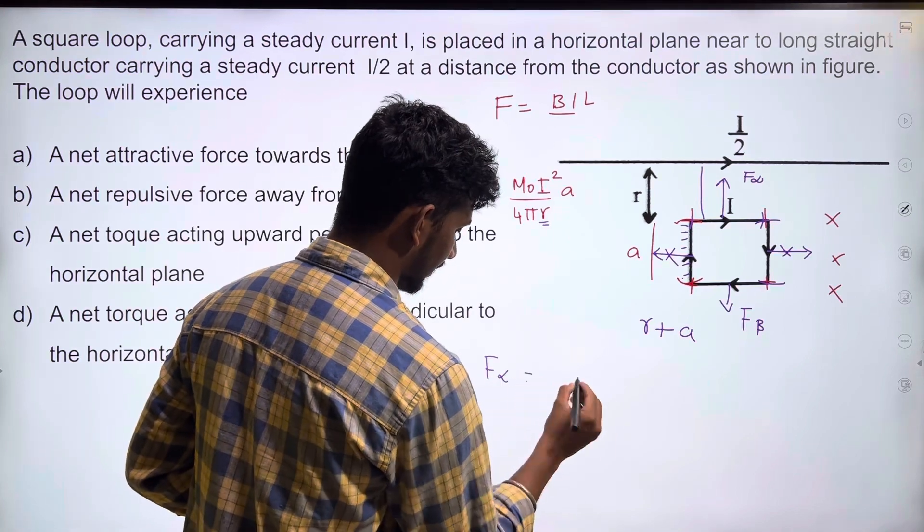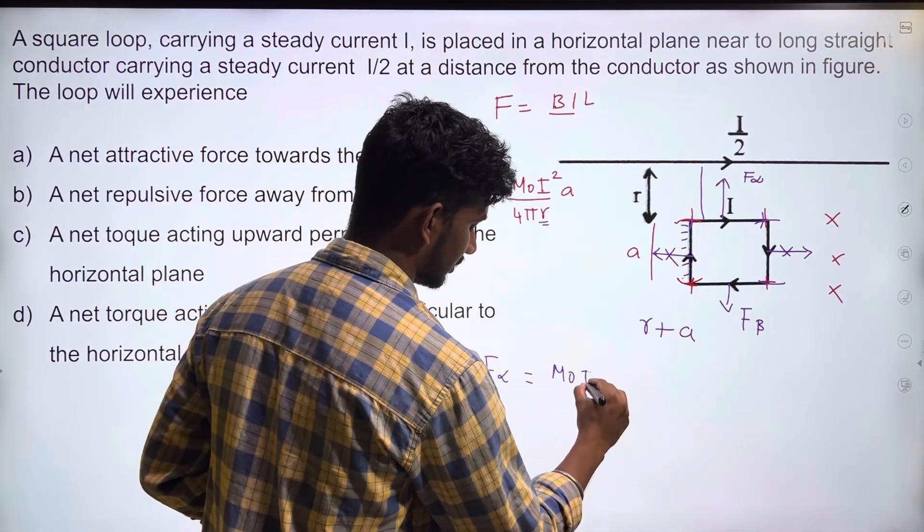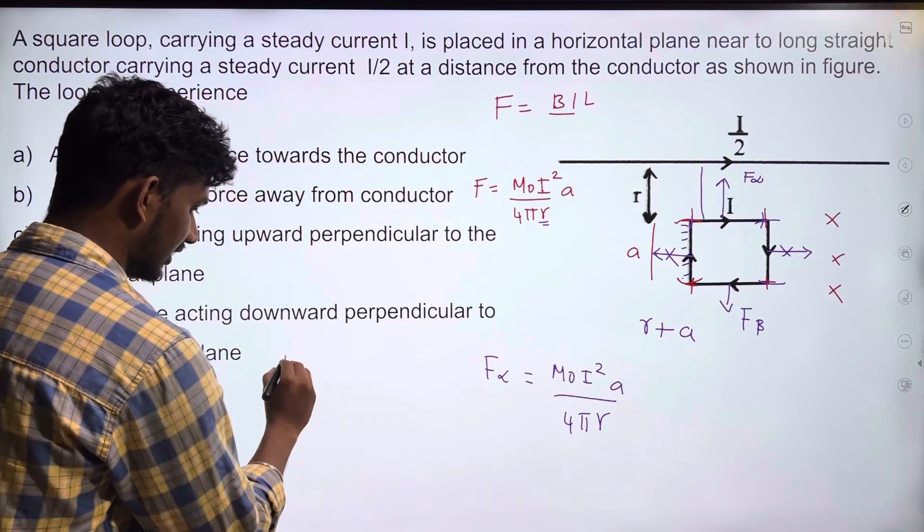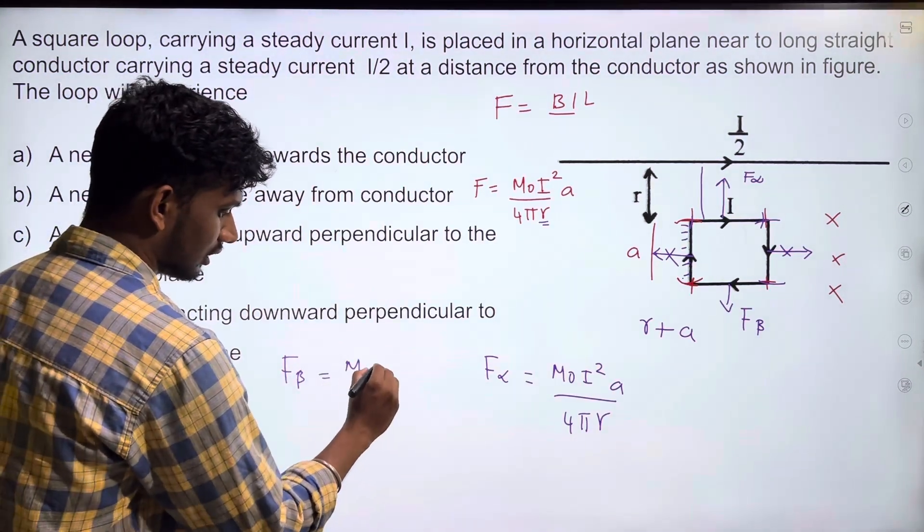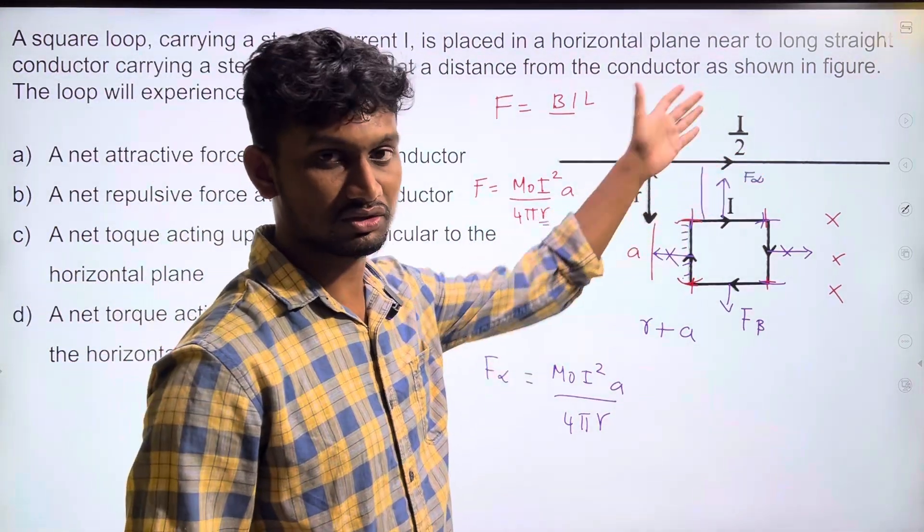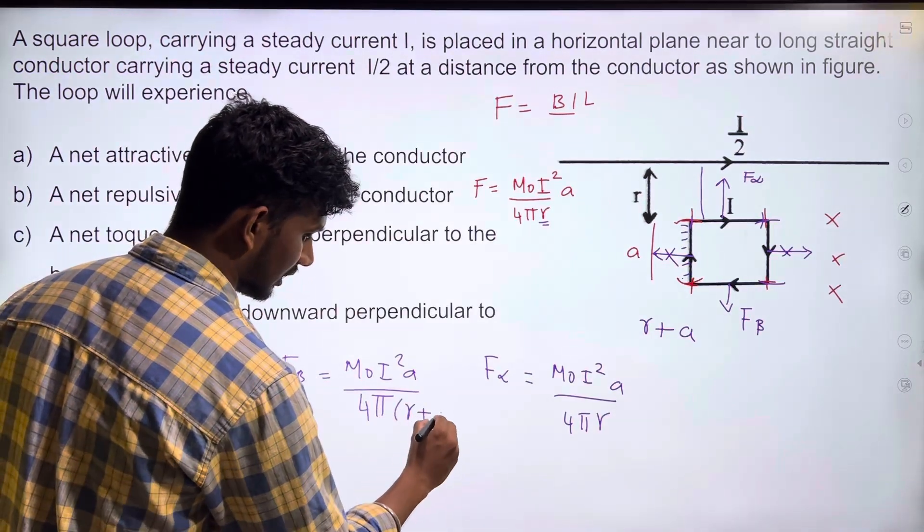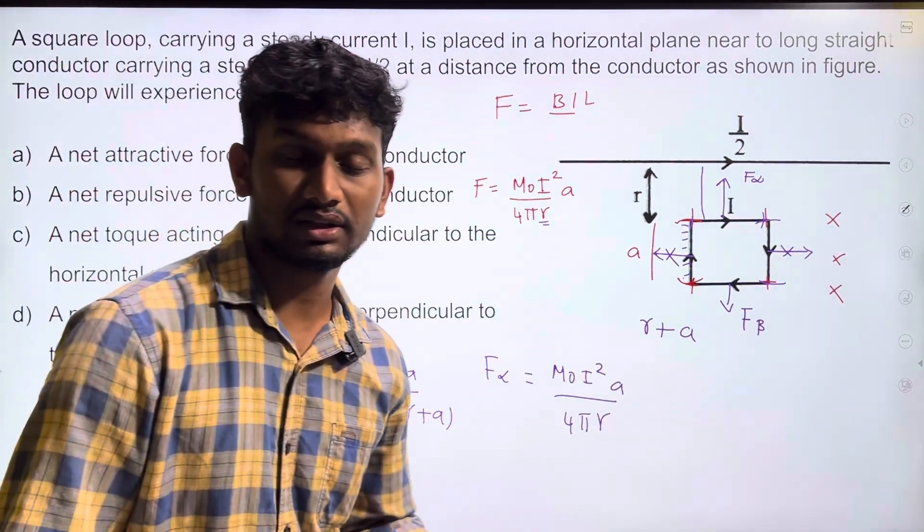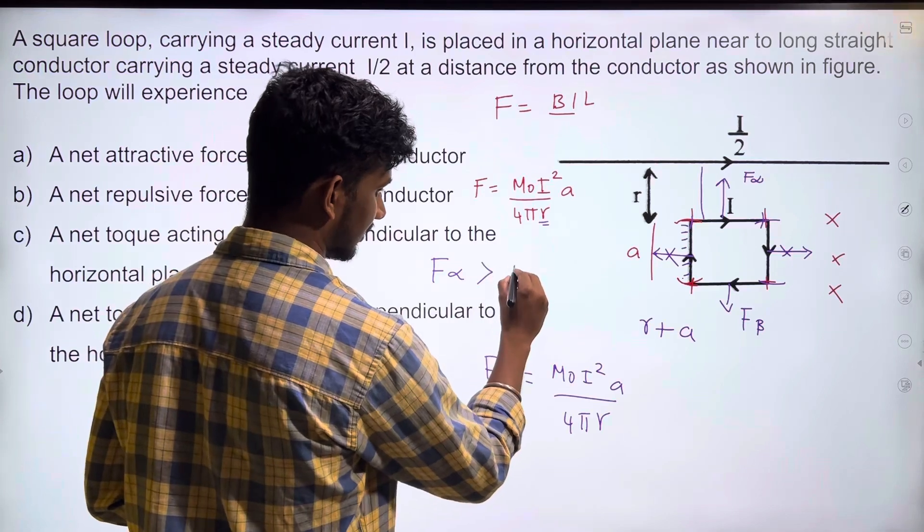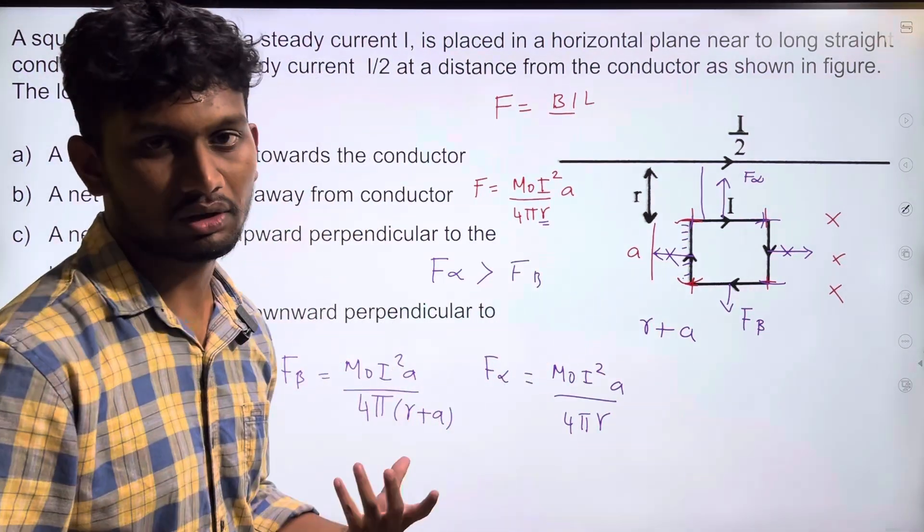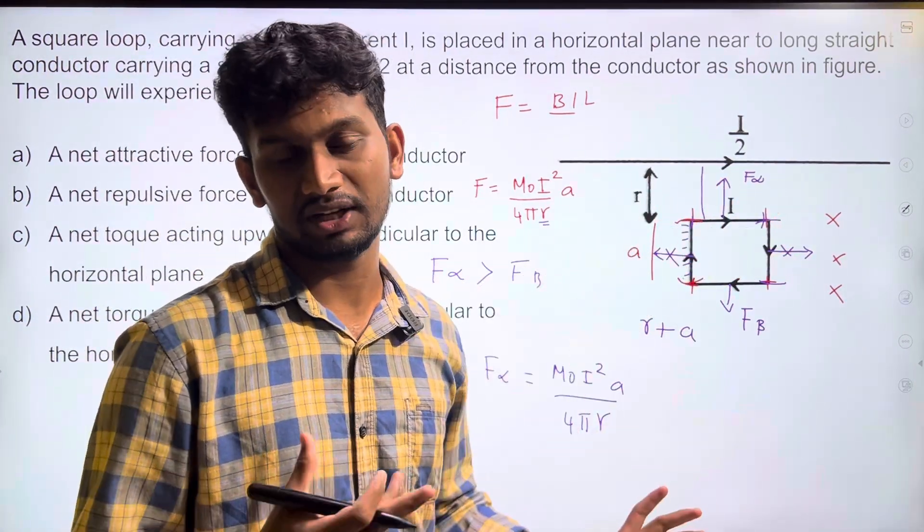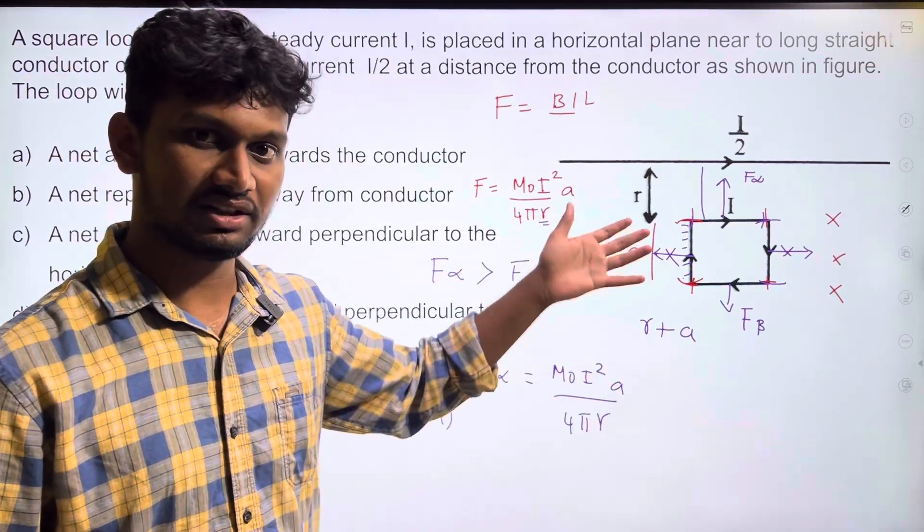So F_alpha = (μ₀I²a)/(4πr), but F_beta = (μ₀I²a)/(4π(r+a)). The numerators are the same but the denominator for F_beta has an extra term, so the conclusion is that F_alpha is greater than F_beta. Even though they are in opposite direction, F_alpha will dominate F_beta. Ultimately, the net force is in the F_alpha direction.